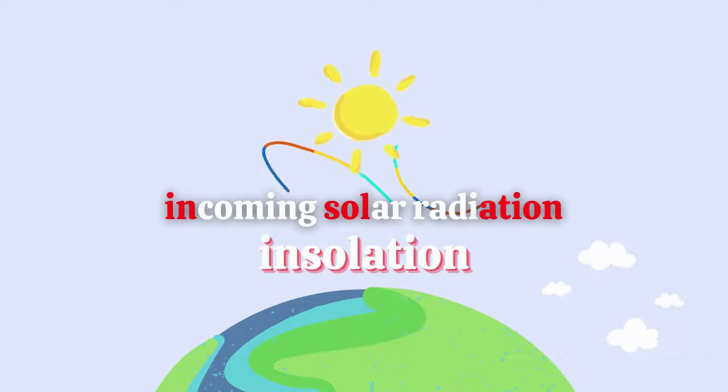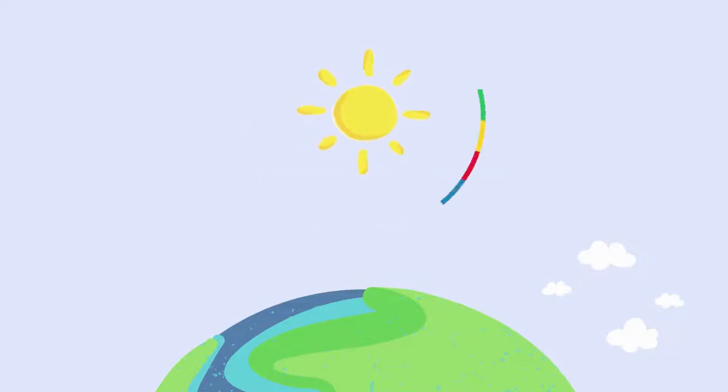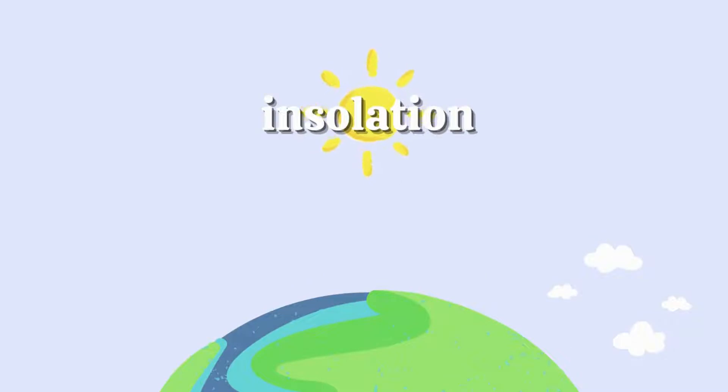Now, you might think that the heat from the sun simply heats the air around us. Easy peasy. But it's not quite that simple. As this insolation moves through the atmosphere, it can either be scattered, reflected, or absorbed.